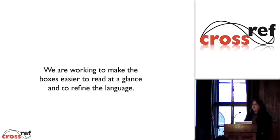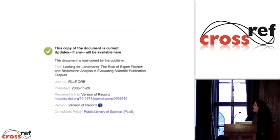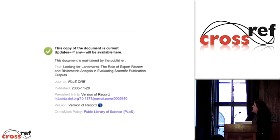As a result of this usability and focus group work, we're working to make those pop-up boxes a little more user-friendly — easier to read at a glance, refined language, and more visual clues. Some recommendations we're looking at include putting an icon right up front, like green means this is good. And because most of the time when somebody clicks on a Crossmark there isn't going to be a correction, we wanted to say 'updates if any will be available here' — so that if the first five times you click on a Crossmark you get a 'no problem' result, at least you know what you would have gotten if there was a problem.